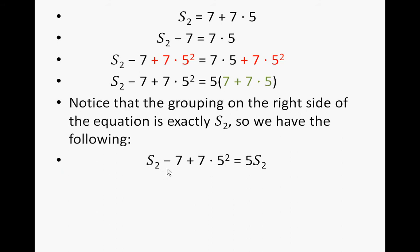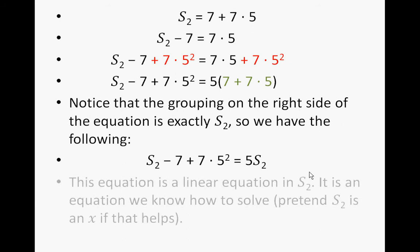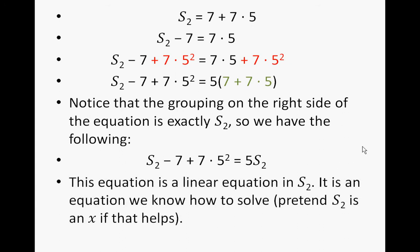So S sub 2 minus 7 plus 7 times 5 squared is equal to 5 times S sub 2. This equation is a linear equation in S sub 2 — it is an equation we know how to solve. If it looks daunting, pretend that S sub 2 is x, and you would get x minus 7 plus 7 times 5 squared equals 5x.